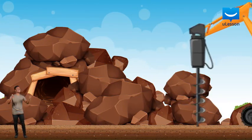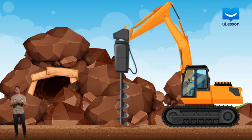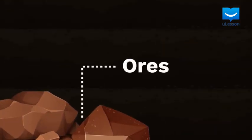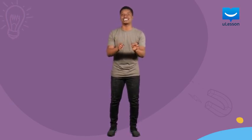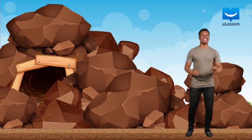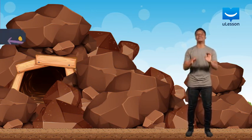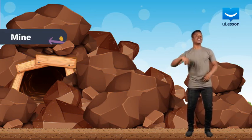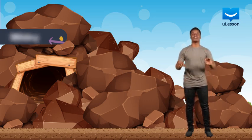Metals can be found naturally in underground deposits. They are mostly found in some special rock samples known as ores. An ore is a rock deposit that contains a significant amount of a metal that can be extracted from it. Ores can be found in large deposits under the earth's crust in what is called a mine.